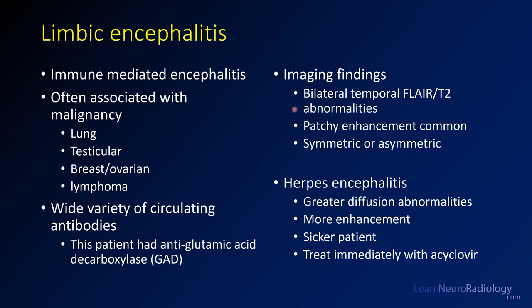In limbic encephalitis, what you'll see is bilateral temporal FLAIR and T2 abnormalities. Maybe you'll have a little patchy enhancement — plus or minus that. It can be symmetric or asymmetric; it was pretty symmetric in this case. In contrast to herpes, herpes usually has greater diffusion abnormality and more enhancement.